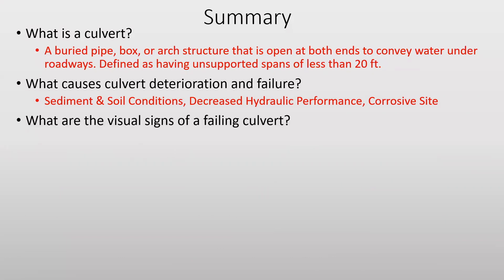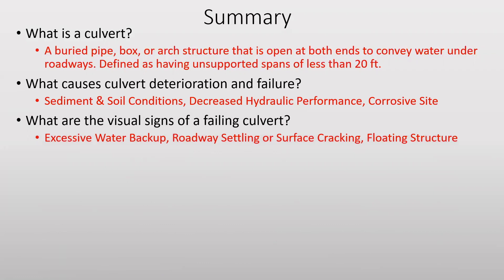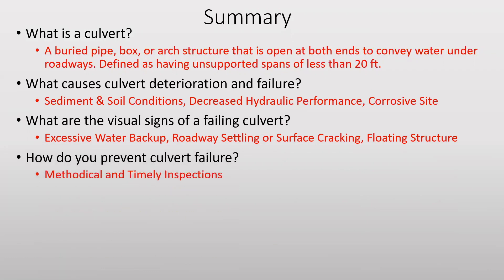What are the visual signs of a failing culvert? Excessive water backup or flooding, roadway settling or surface cracking, or a floating structure that would indicate water has gotten in between the culvert and the surrounding soils. How do we prevent culvert failure? Through methodical and timely inspections.